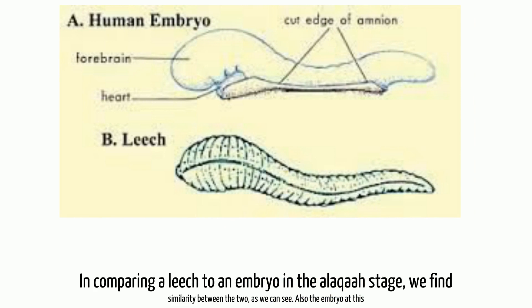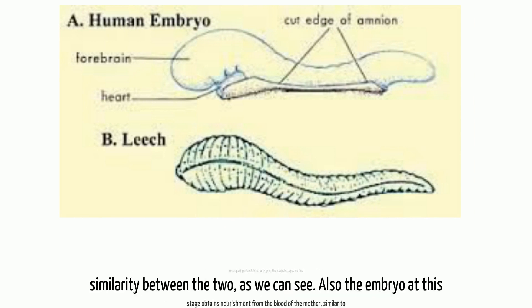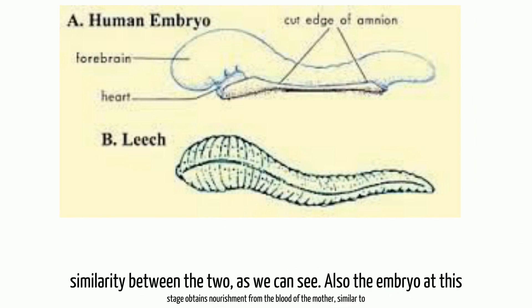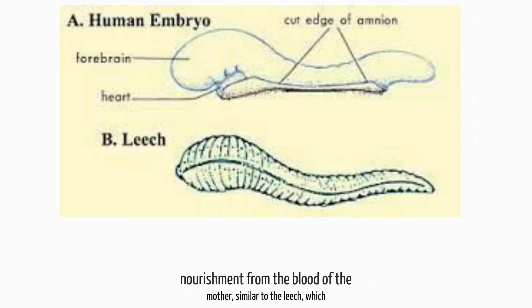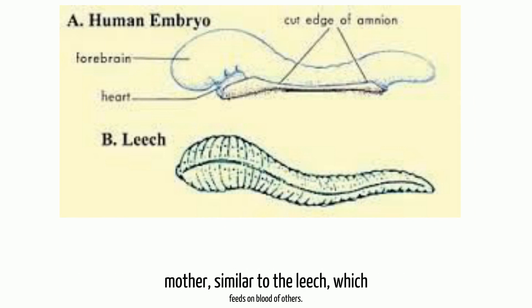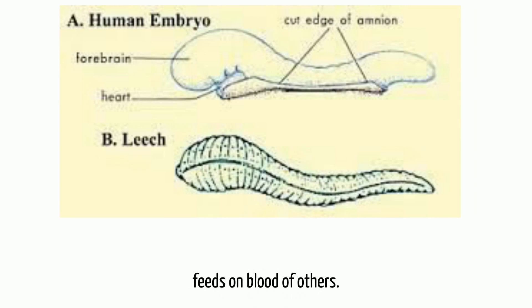In comparing a leech to an embryo in the alakha stage, we find similarity between the two, as we can see. Also the embryo at this stage obtains nourishment from the blood of the mother, similar to the leech, which feeds on the blood of others.